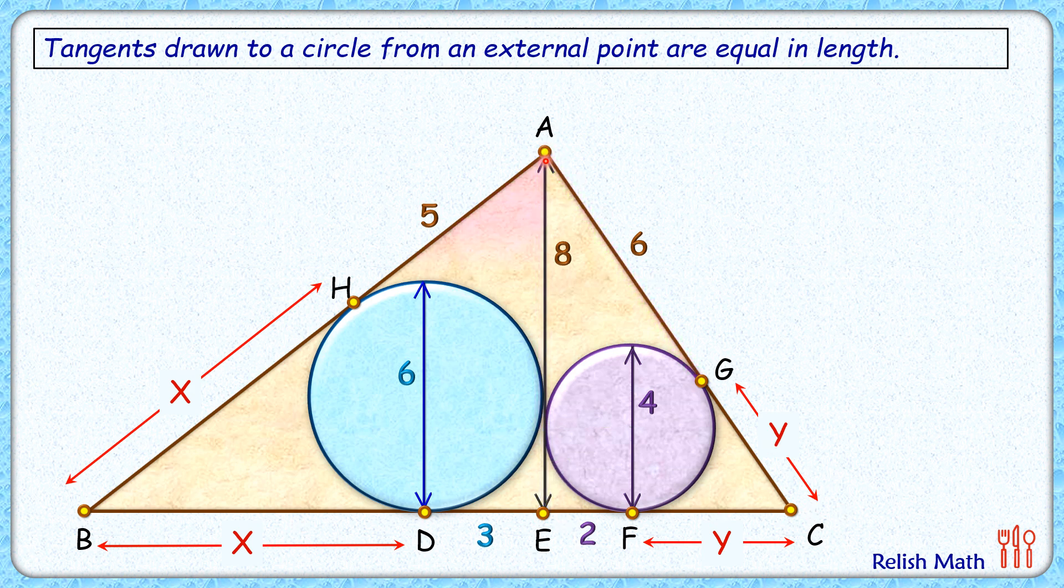Let's consider this right angle triangle AEB. Applying Pythagoras theorem, we get base, that is (x + 3)², plus this height which is 8, so plus 8², equals hypotenuse square which is (x + 5)².